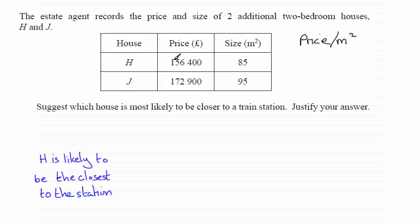So for the first one here, 156,400 divided by 85, that gives us 1840—1840 pounds per square meter. Do the same again for J and you'll find you get 1820.